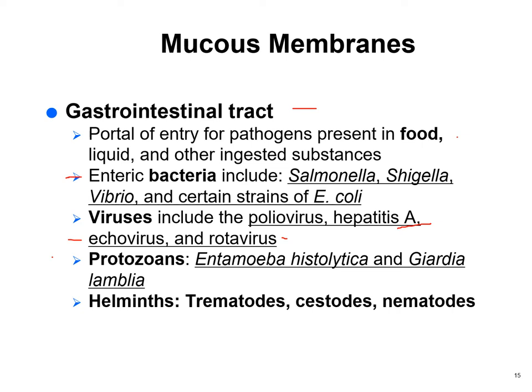Where did hepatitis A get into an oyster or rotavirus? These are human pathogens — they got there through sewage contamination in the ocean where those shellfish were collected. It's disgusting, but some places don't treat sewage properly.